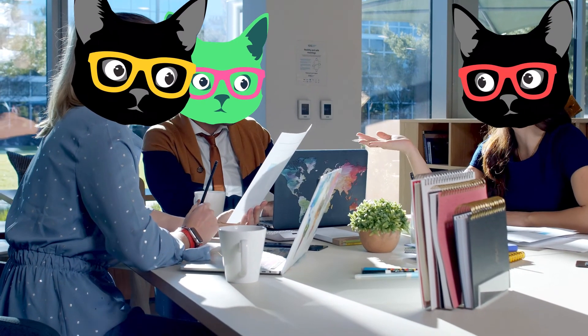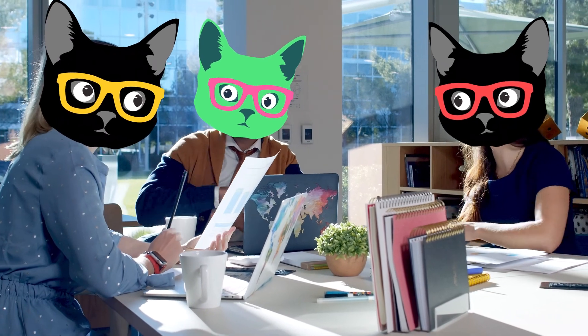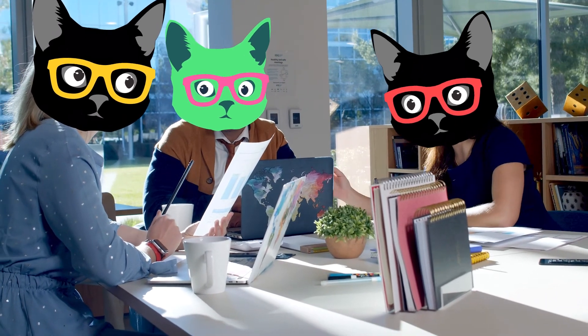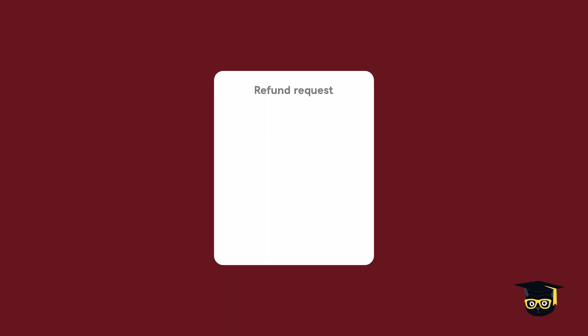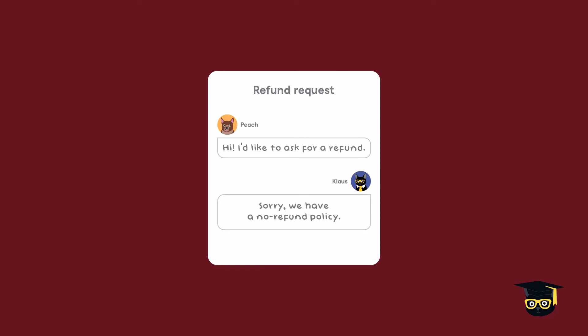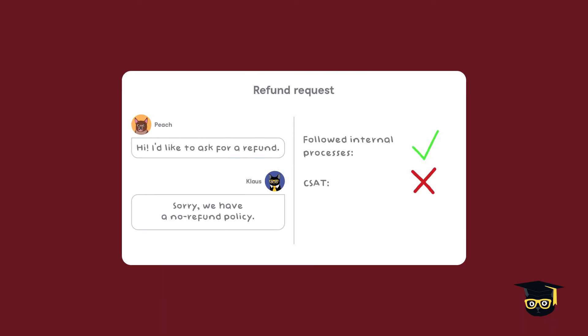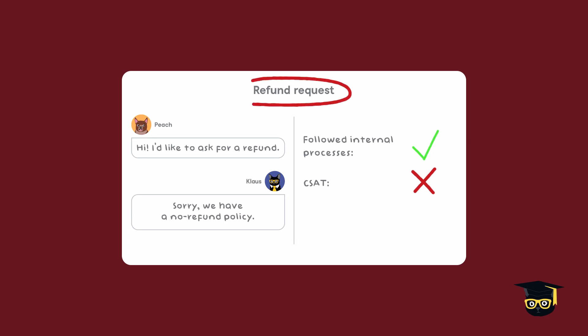Calibration sessions can also lead to important discussions around internal processes for your support team. If you identify conversations where the QA assessment is positive but the CSAT is negative, you may need to review your internal guidelines. Calibration sessions are a great place to discuss these processes and find ways to improve them. You might be surprised to find outdated processes or even ones where no one actually knows why they exist in the first place.